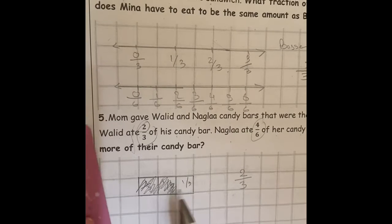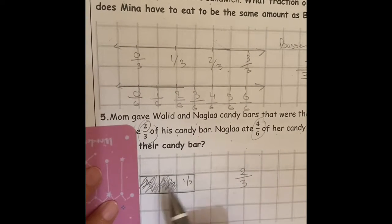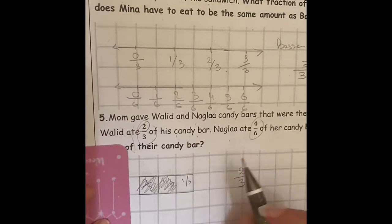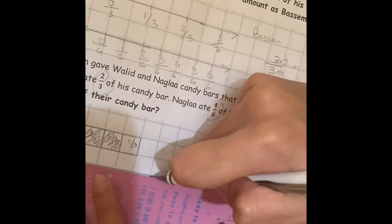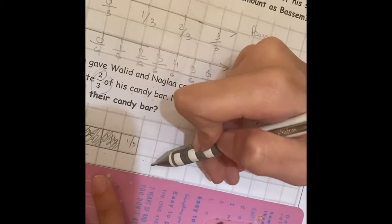Now I'm going to draw the stripes for Nagla. Nagla ate 4 over 6. I'm going to draw 6 stripes. 1, 2, 3, 4, 5, 6.